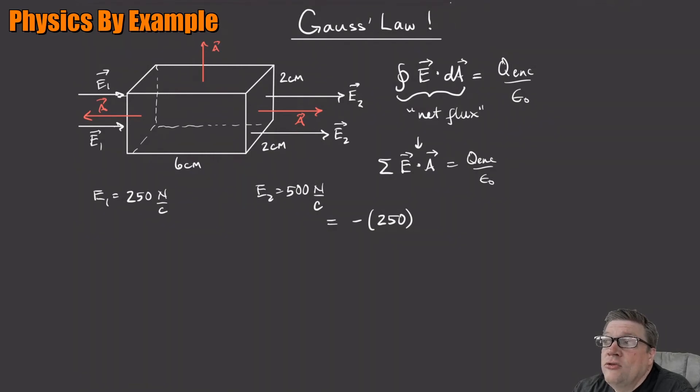What's the area? It looks like it's 2 centimeters squared, so it's 250 times 0.02 squared. And then I have to add the flux coming out, so I got plus 500 times 0.02 squared. There we go.